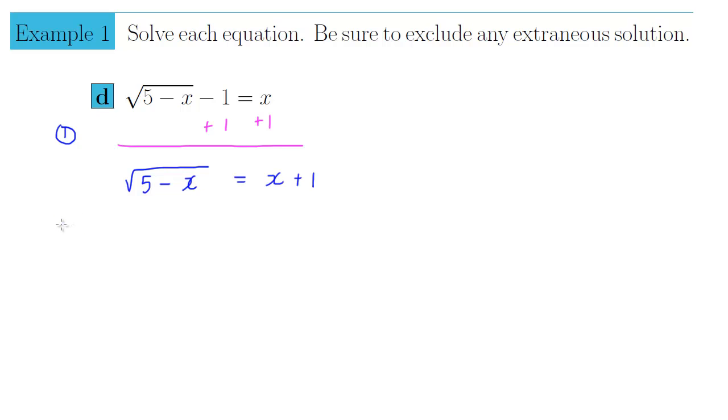Step 2 says to get rid of your nth root by raising both sides to the nth power. So since I have a square root, I'm going to square both sides to get rid of it. So I square both sides, on the left side it's pretty obvious what happens. The square root and the square undo each other and leave you with exactly what was underneath, 5 minus x.